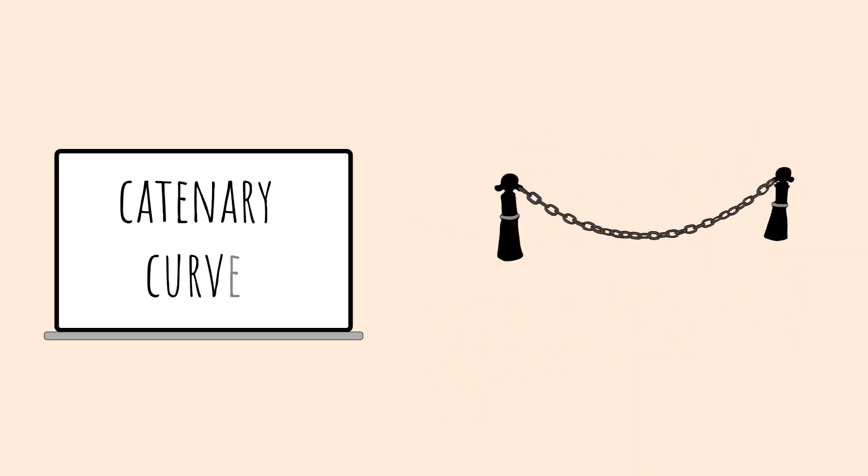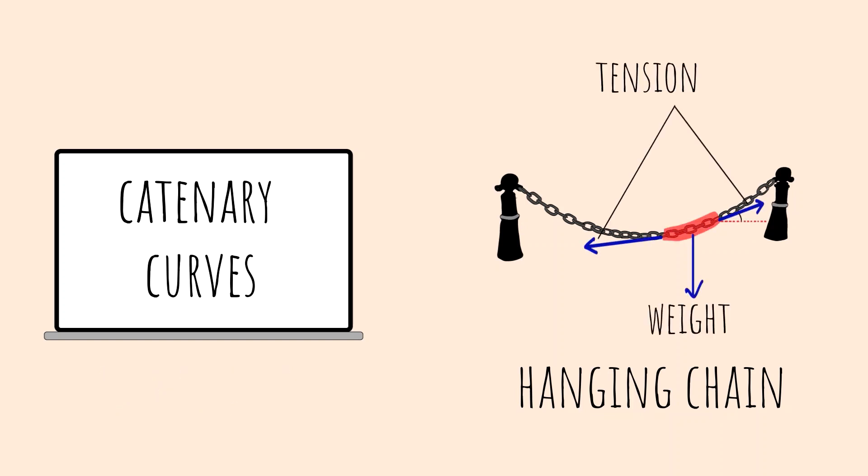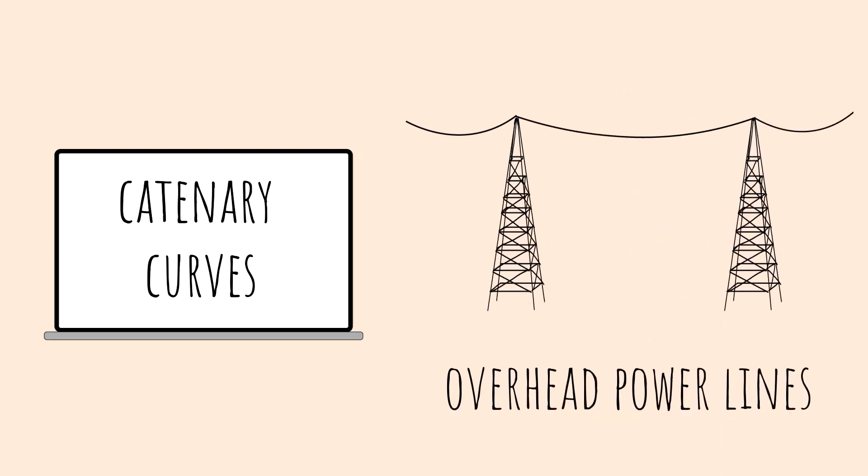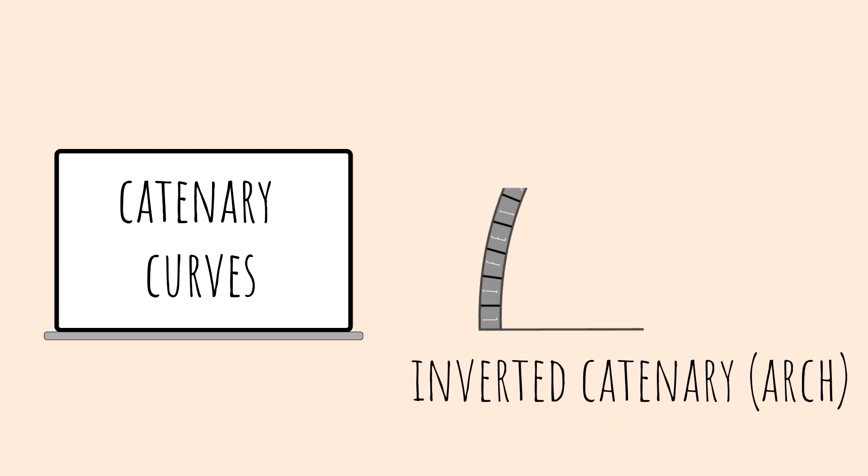You might have seen the hanging chains on the roadside or other places. These chains, which are curved due to their weight, are examples of catenary curves. The tension vectors determine the curved shape of the chain. The same principle is applied in freely hanging overhead power lines and also explain the balance of internal forces in an arch which is an example of inverted catenary.